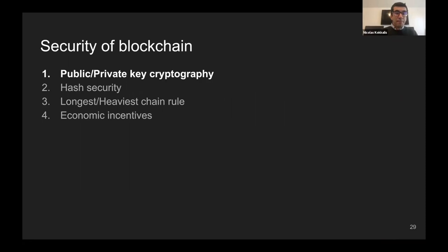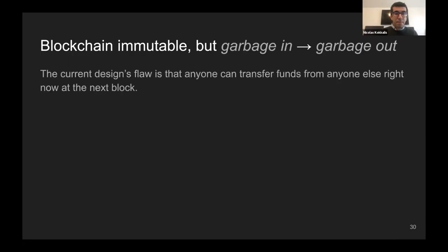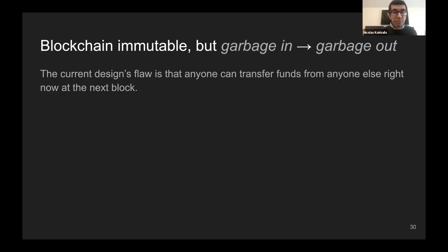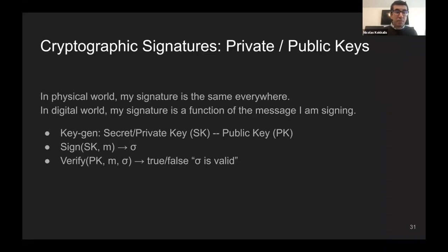Why is public/private key cryptography needed? In the previous class we just wrote 'Alice sends to Bob three Bitcoin' in the data field of a block, but there's no guarantee Alice is actually the one sending those funds. Anyone could change the message to send funds to themselves, and Alice could say she didn't authorize it. This design is essentially garbage. Cryptographic signatures are the key solution here.